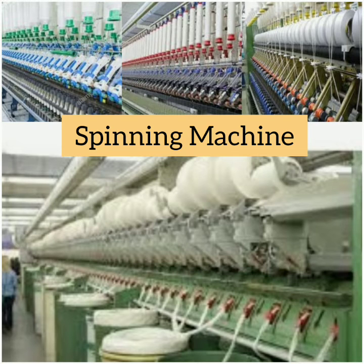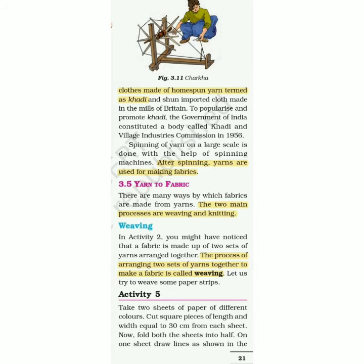New topic 3.5: Yarn to Fabrics — taage mein se kapda banana. There are many ways by which fabrics are made from yarns. The two main processes are weaving — bunai in Hindi, vanat in Gujarati — and knitting — bandai in Hindi, gunthan in Gujarati. The process of arranging two sets of yarn together to make a fabric is called weaving. Please underline this.